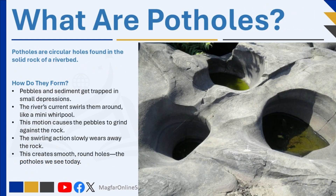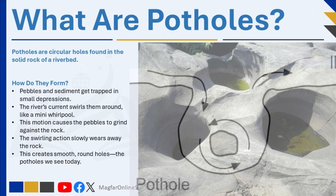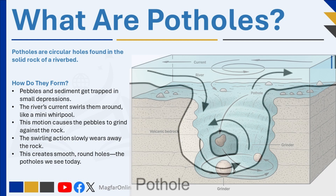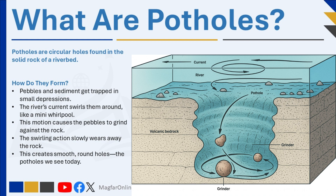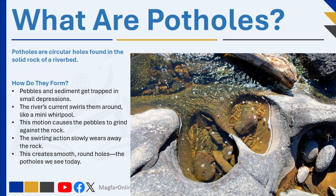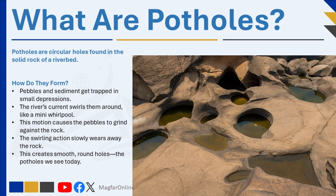Potholes are circular holes found in the solid rock of a riverbed. They form when pebbles and other sediment are trapped in small depressions and swirl around with the river's current. Over time, this movement grinds and wears away the rock, creating smooth, round holes in the riverbed.